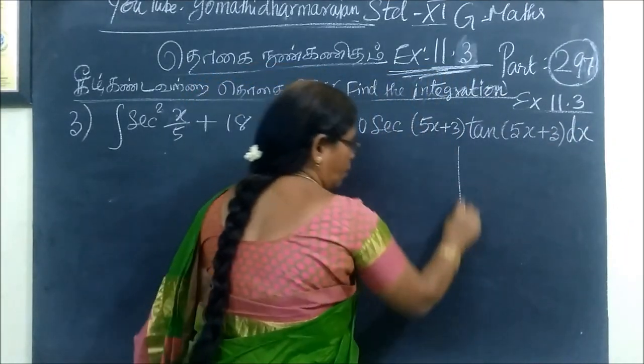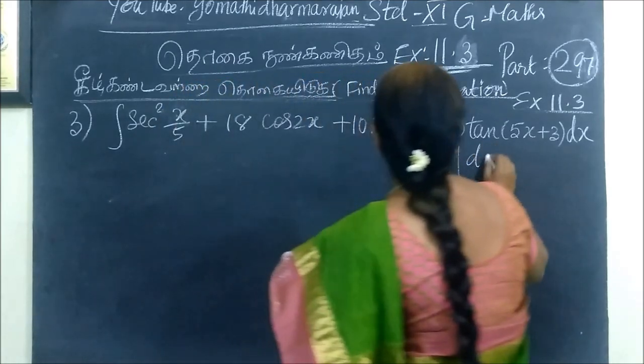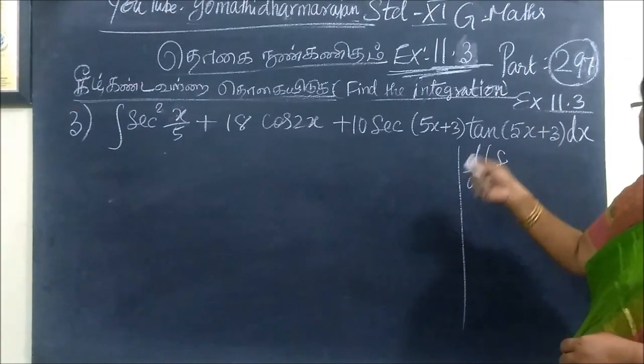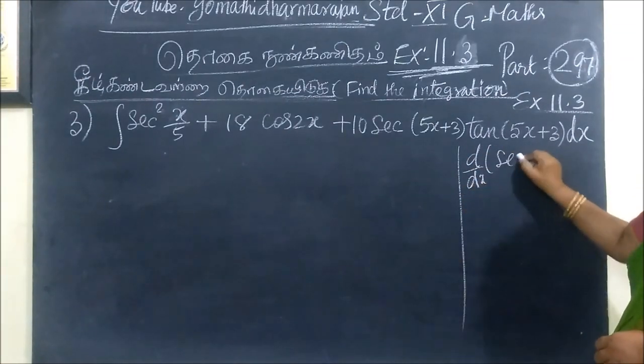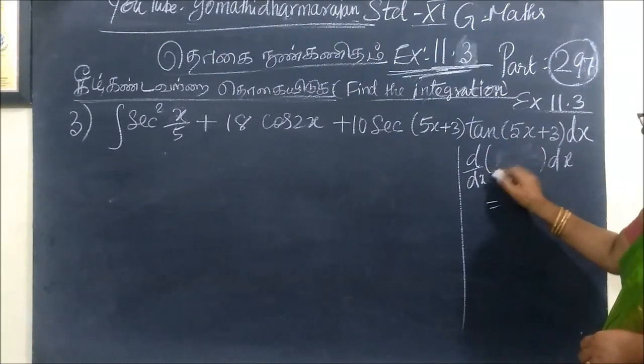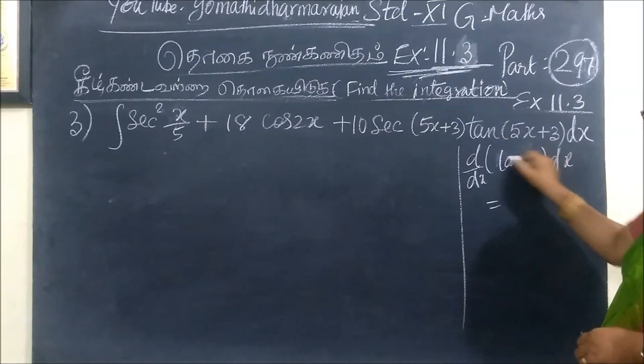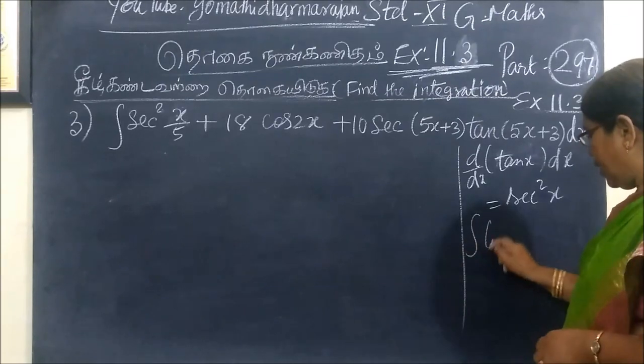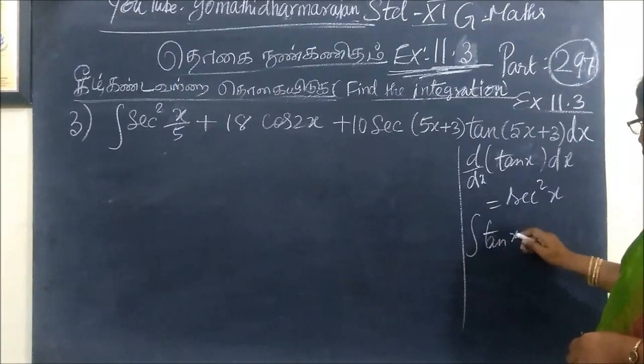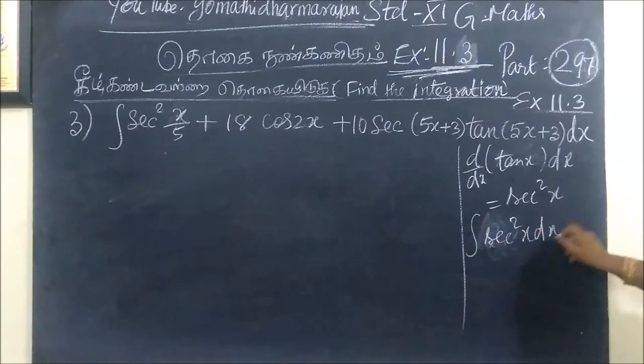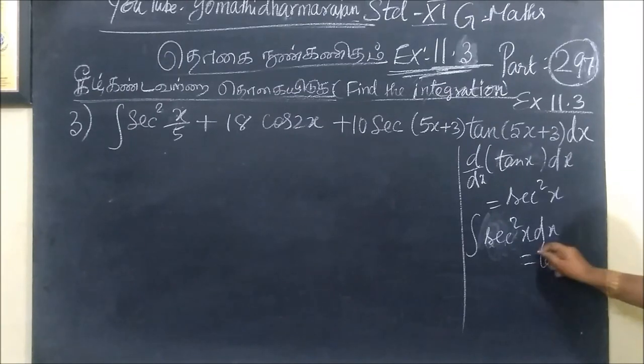Before that, the formula will be noted. Suppose d by dx will be used. D by dx of tan x equals sec² x. Integral of tan x is the integral of sec² x. This will enhance the order. Tan x is the name.